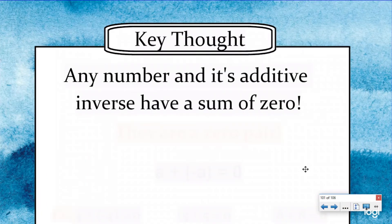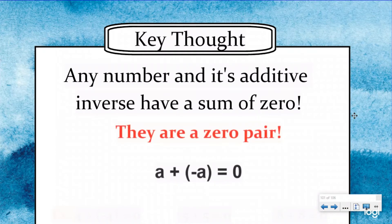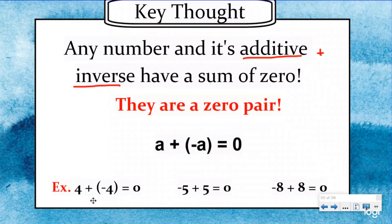Our key rule for today: any number and its additive inverse have a sum of zero — in other words, they are a zero pair. Additive inverse is just a fancy way of saying you are adding the opposite. So here, if I have a number and I add the opposite of that, that's going to be zero. If I have positive four and I add the opposite, that's going to be zero. If I start out at negative five and add the opposite of negative five — which would be positive five — I'm going to end up at zero. And if I start at negative eight and add the inverse of that, I'm going to end up at zero. So negative eight and eight are a zero pair, negative five and five are a zero pair, and positive four and negative four are also a zero pair. Any number, when you add it to its opposite or its additive inverse, is going to give you a sum of zero.